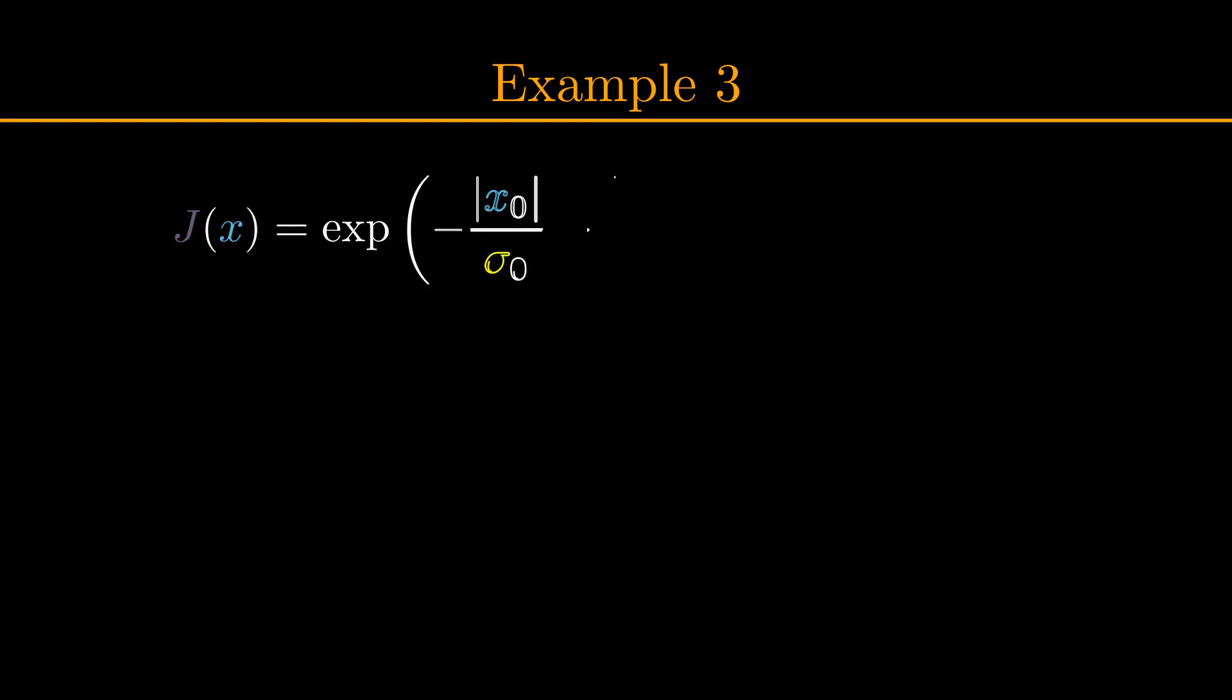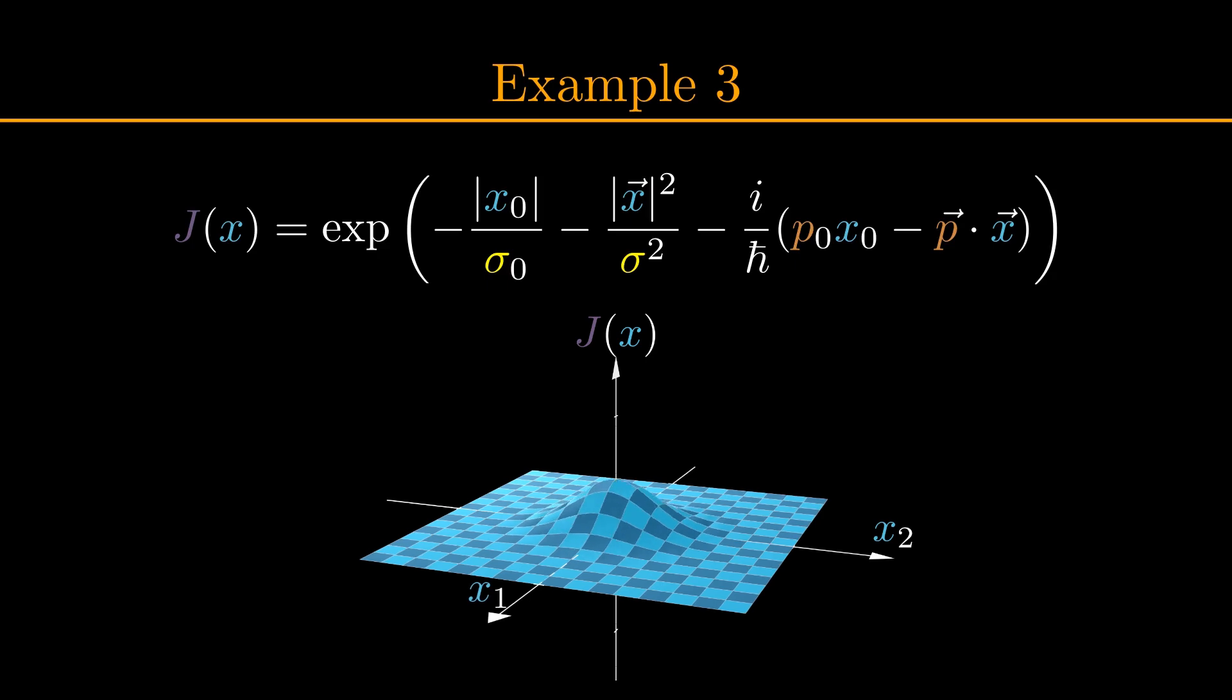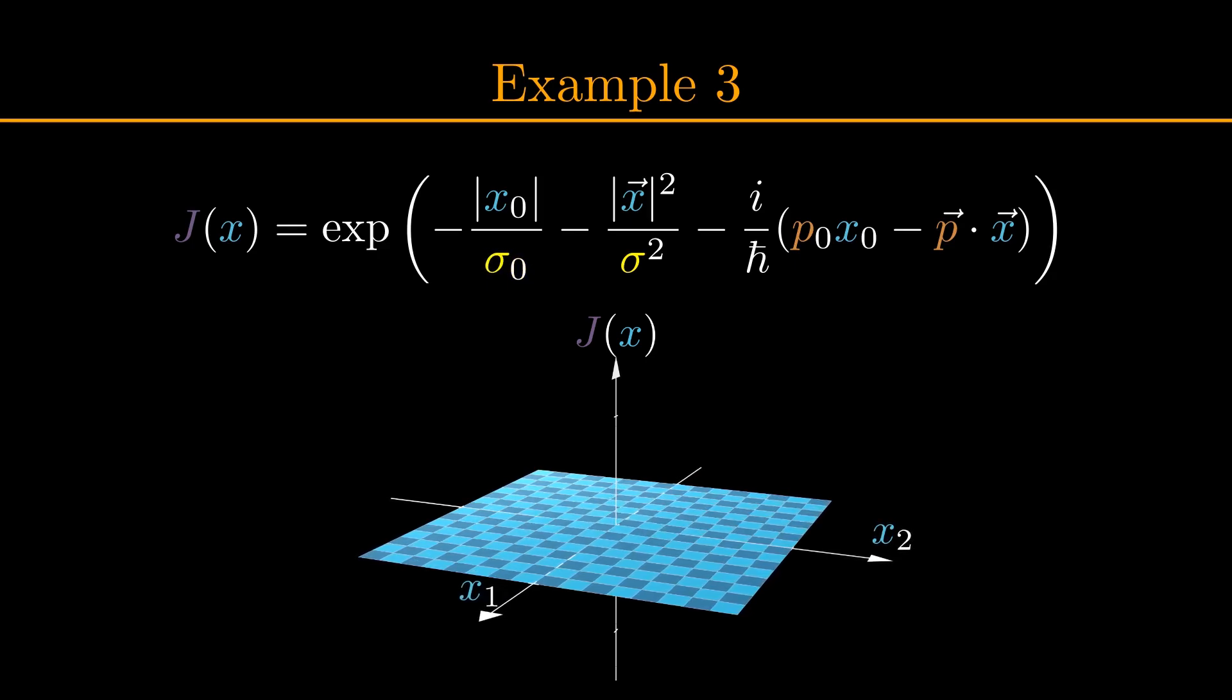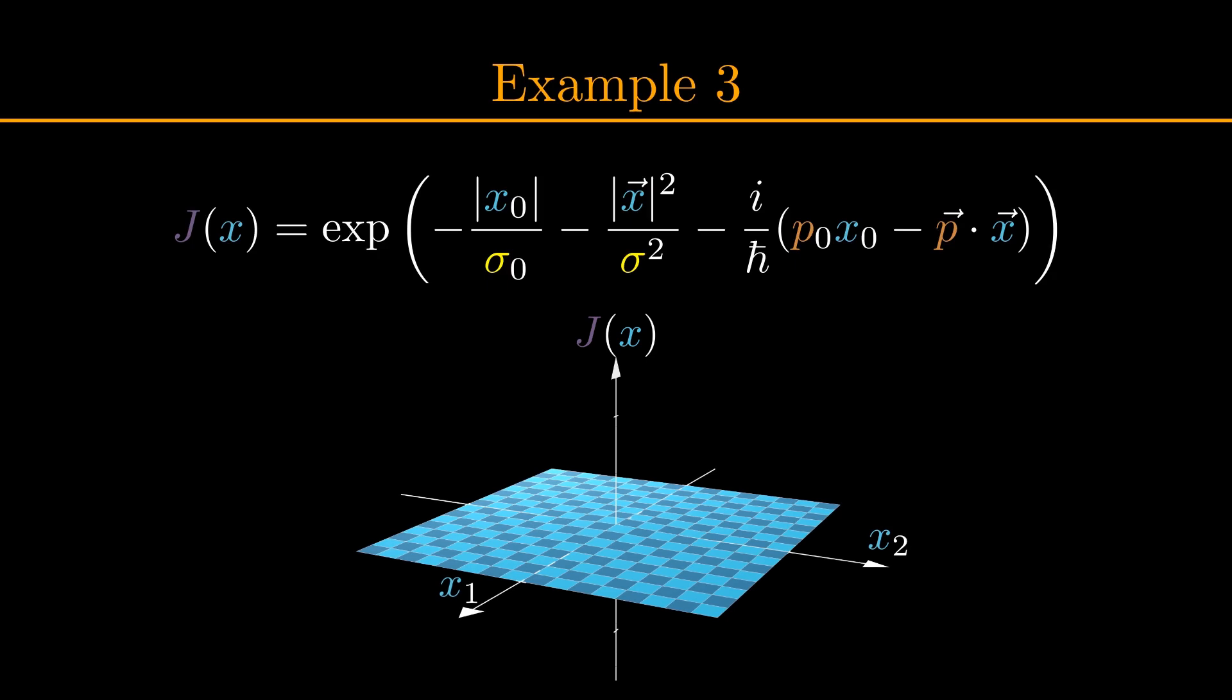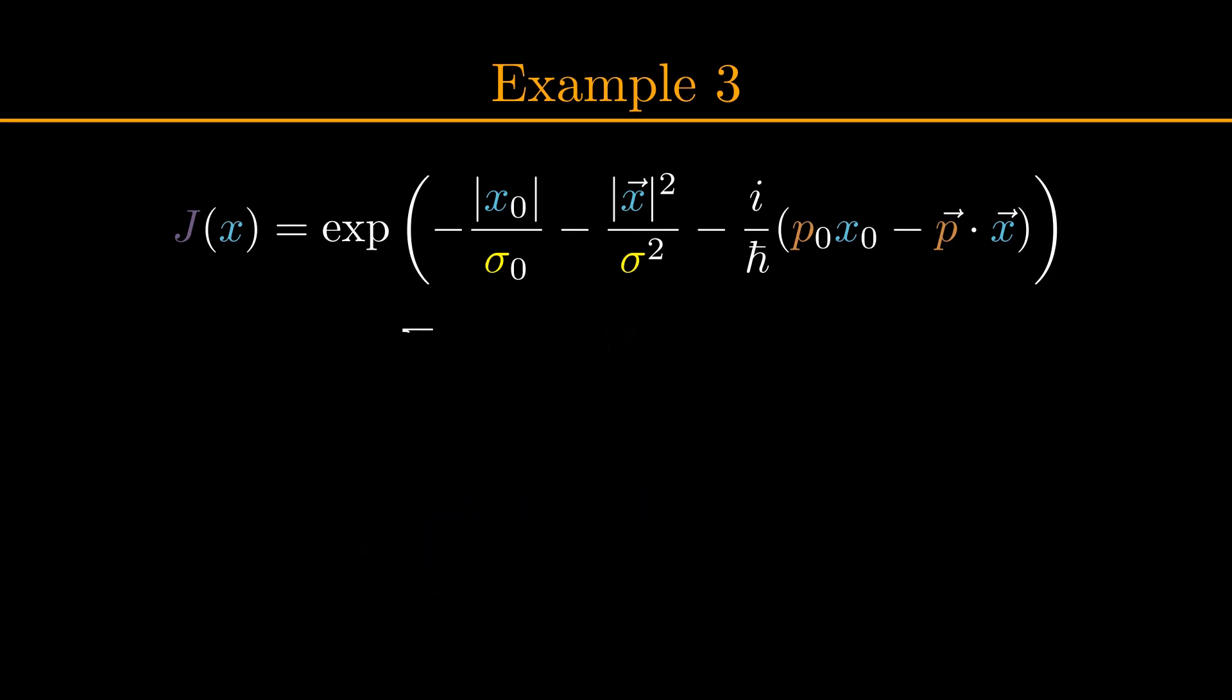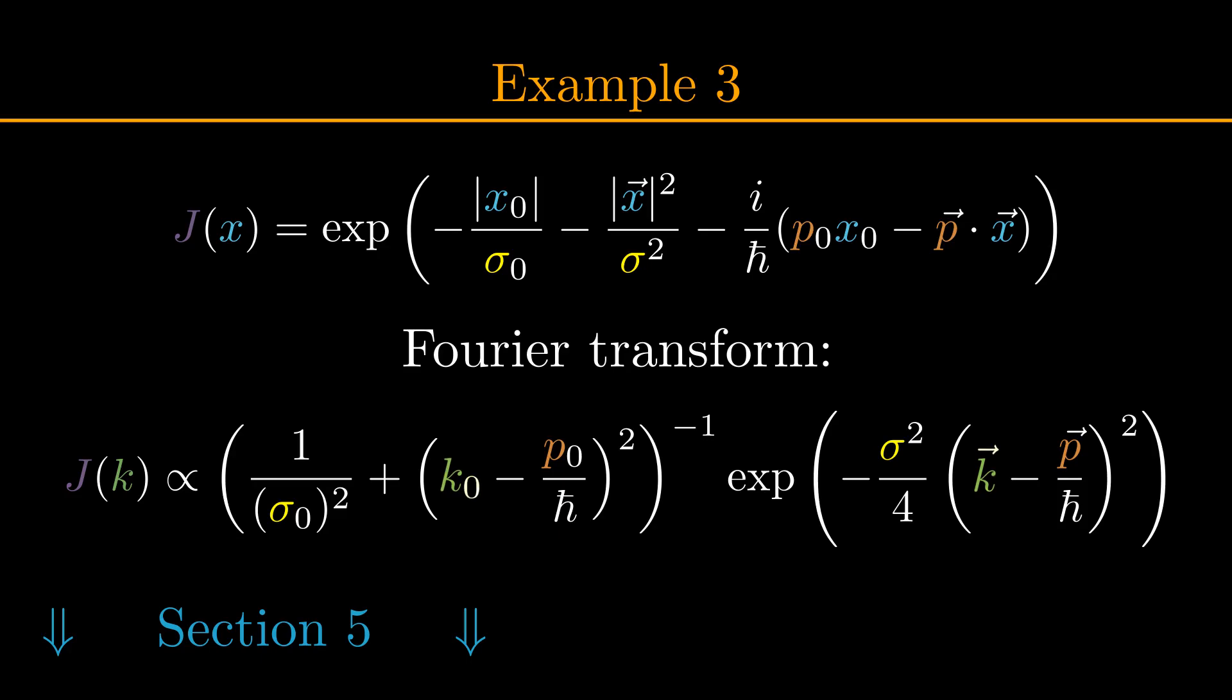Our last example is the following very specific formula for a source term. You could read this as a source that is active for some time sigma zero around t equals zero, and in the region of volume sigma cubed around the spatial origin. The terms including the momenta p0 and vector p are added for reasons that become clear when you study the Fourier transform of this source. I worked this out for you in section 5 of my document, and it is written like this. Notice that from this form you can deduce that the momenta k of the particles produced by this source are centered around p0 and vector p, so while the source is located in physical space for some short amount of time, through another lens it can be seen as producing particles around momentum p. Unfortunately, we cannot easily solve the field function of this complex source, but we can derive some useful results from it if we study the math together.